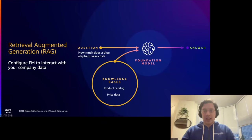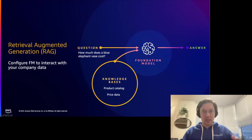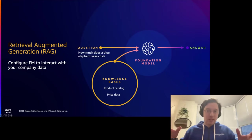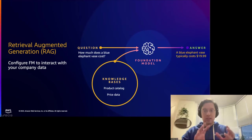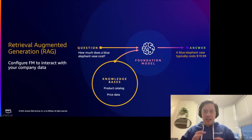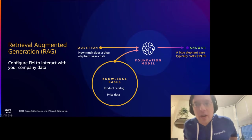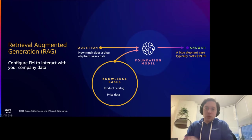Normally if you take a standard foundational model and ask it how much a blue elephant vase costs, it's probably going to answer 'I don't know,' because it's looked at Wikipedia but not your product catalog. With RAG, you might have a knowledge base — in this case a Postgres database — containing your product catalog, inventory, and pricing data. When a request comes in, you augment the response by adding that context, such as 'a blue elephant vase costs about $20.'